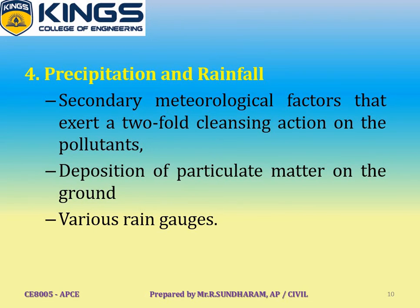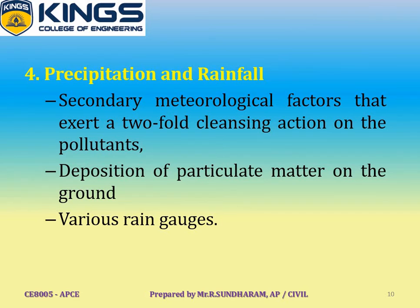Next, precipitation and rainfall. Precipitation and rainfall are secondary meteorological factors. Rainfall accelerates the deposition of particulate matter on the ground and reduces the concentration of gaseous pollutants which are soluble in water. Rainfall is estimated using various rain gauges, and precipitation exerts a two-fold cleansing action on pollutants.